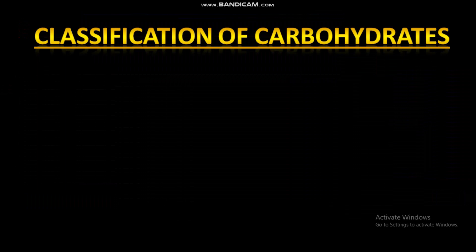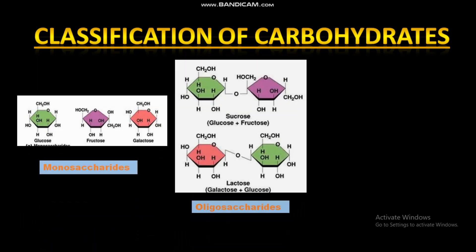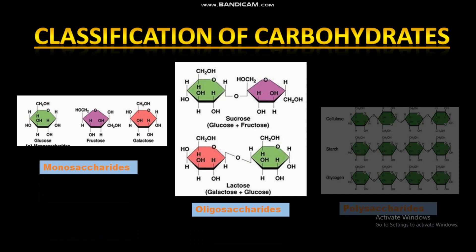Classification of carbohydrates: carbohydrates are often referred to as saccharides. They are broadly classified into three major groups — monosaccharides, oligosaccharides, and polysaccharides. This categorization is based on the number of sugar units, or number of saccharides.